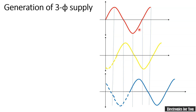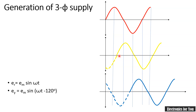Let us consider the mathematical expression for this. Taking red as a reference, for the sine wave it is ER = EM sin(ωt). Since yellow is 120 degrees apart and lagging, we get EY = EM sin(ωt − 120°). The minus sign indicates the lag of 120 degrees. The third wire EB is 240 degrees lagging from the reference, so EB = EM sin(ωt − 240°). These are the mathematical expressions for the three different waves.